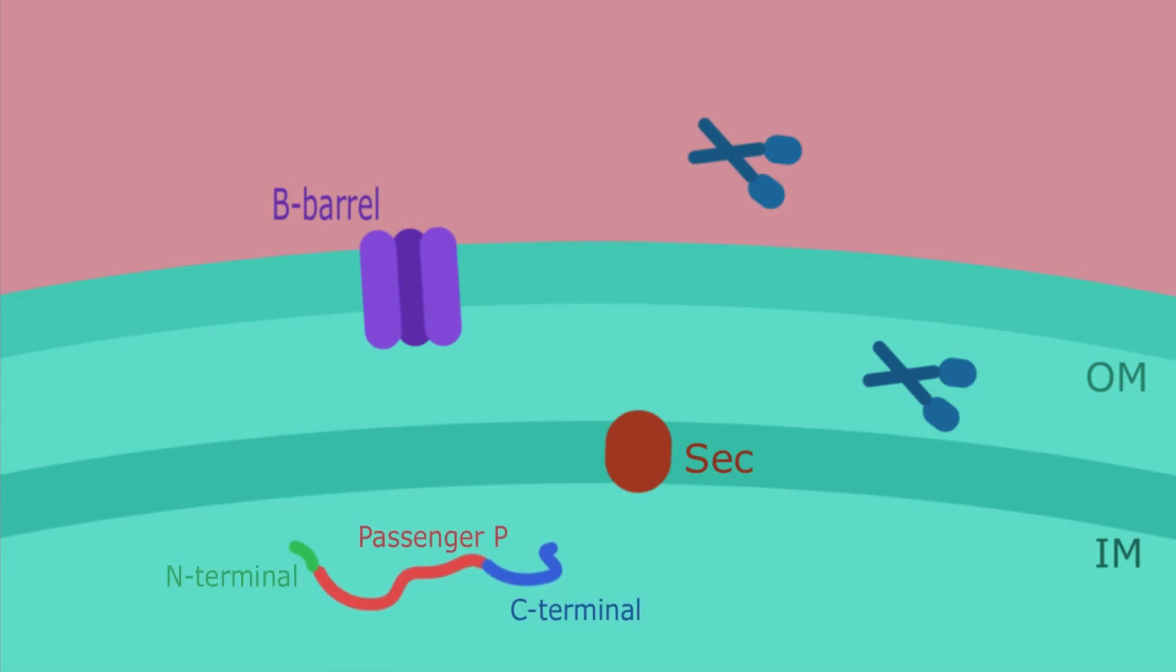First, the N-terminal binds to the sec protein in the inner membrane and the entire protein is then transported out to the periplasmic space.